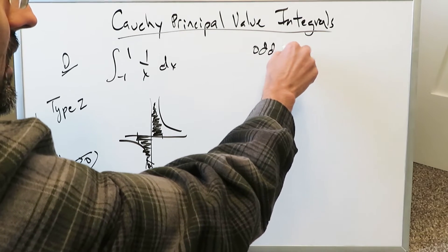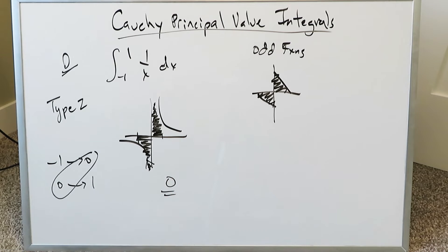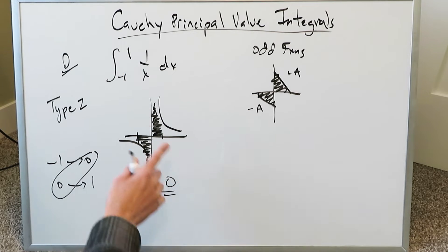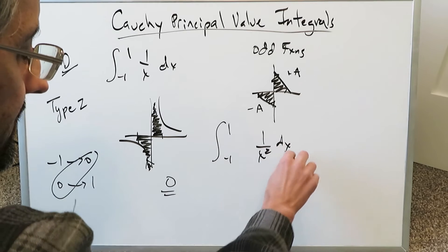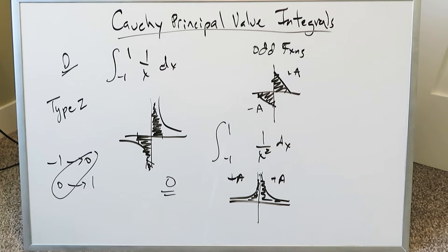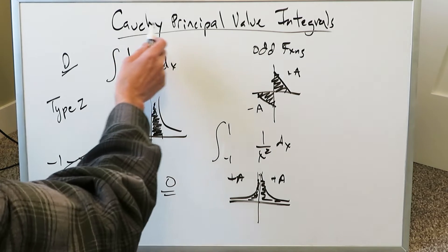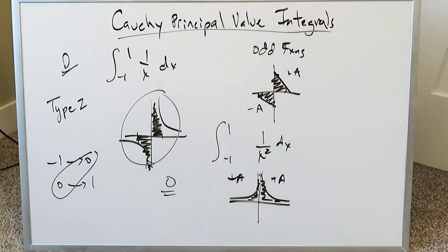It has a symmetry similar to what you would see with odd functions. Some of it is positive with regards to area and the rest is negative, and you can have some form of cancellation — partial or complete — based on how these intervals are set up. However, if this same representation was minus 1 to 1 for 1 over x squared dx, you know the graph of that has more of an even function representation and you don't have that cancellation. Both areas are positive, so reserve this principal value concept for representations where you have some positive and some negative area and things can cancel out, whether fully or partially.